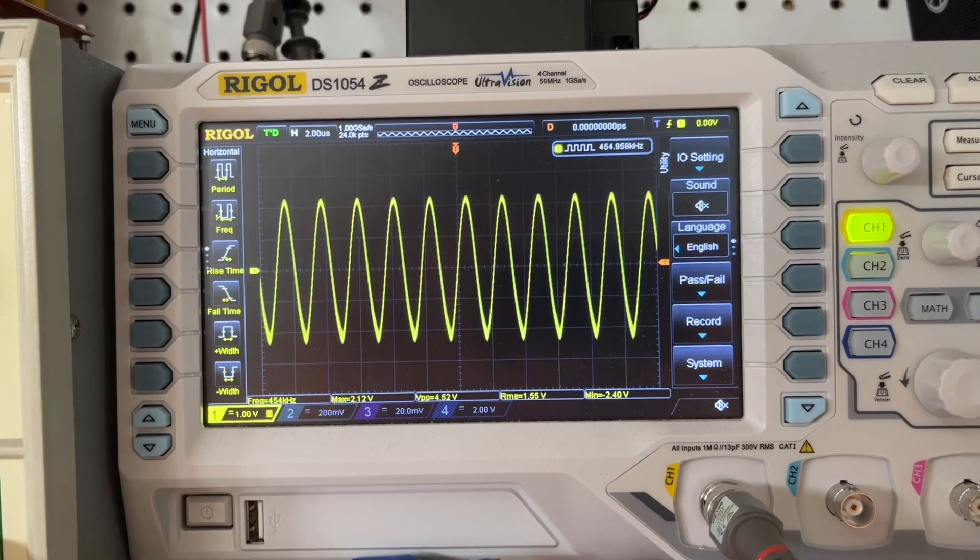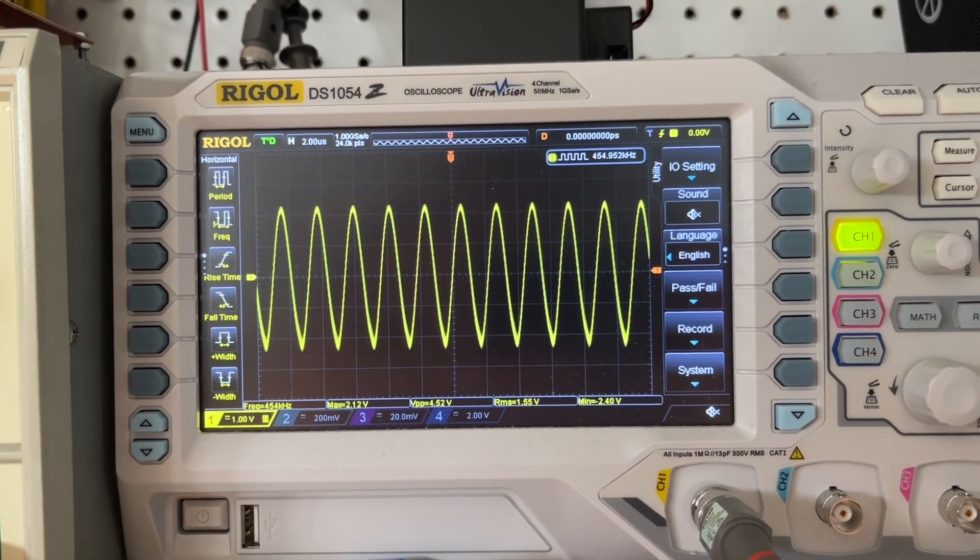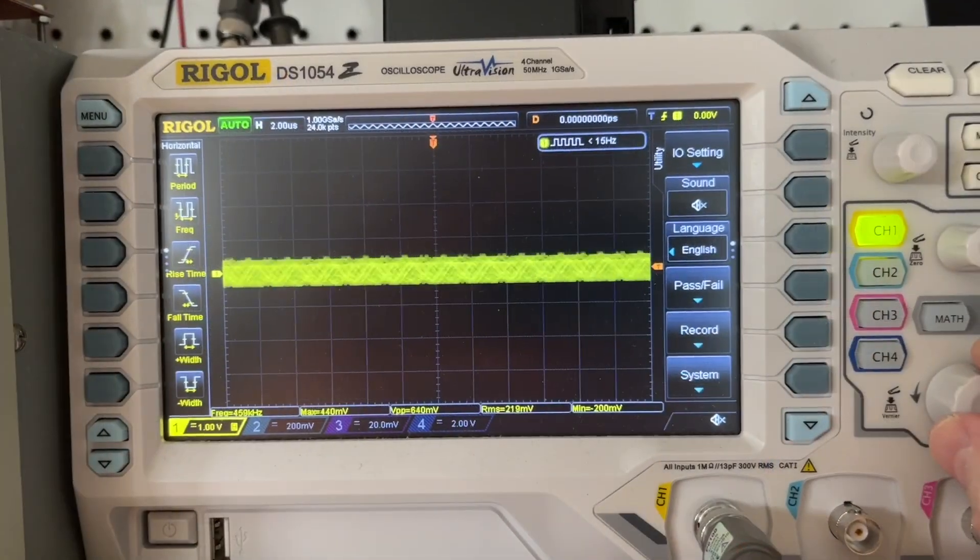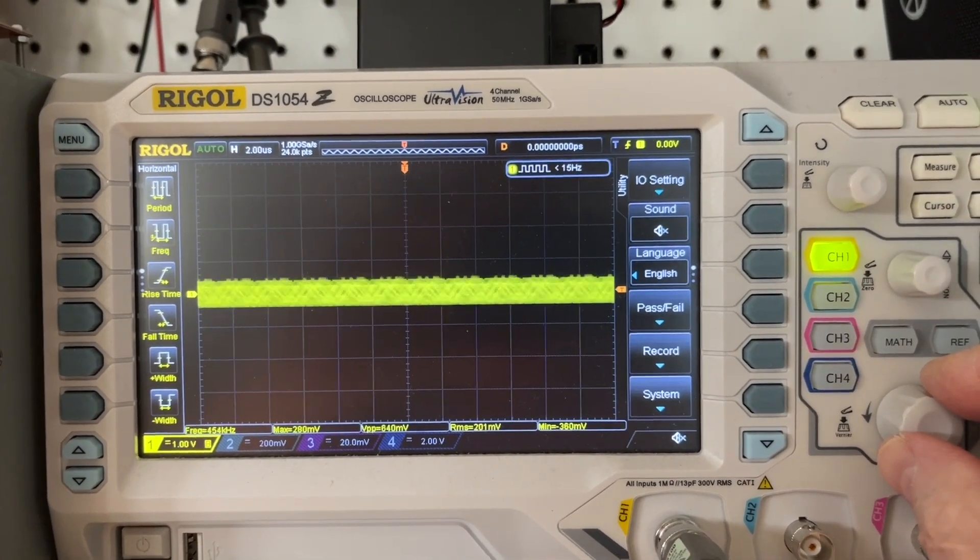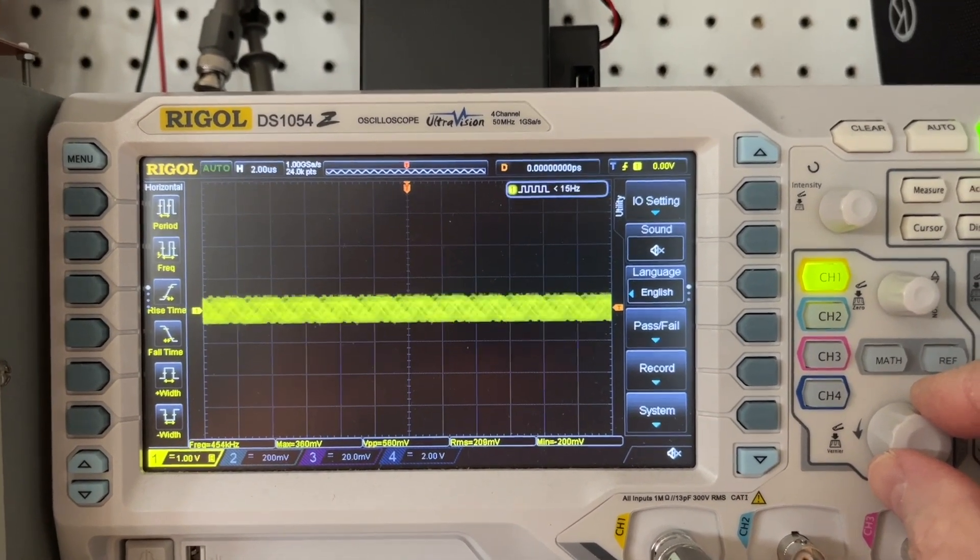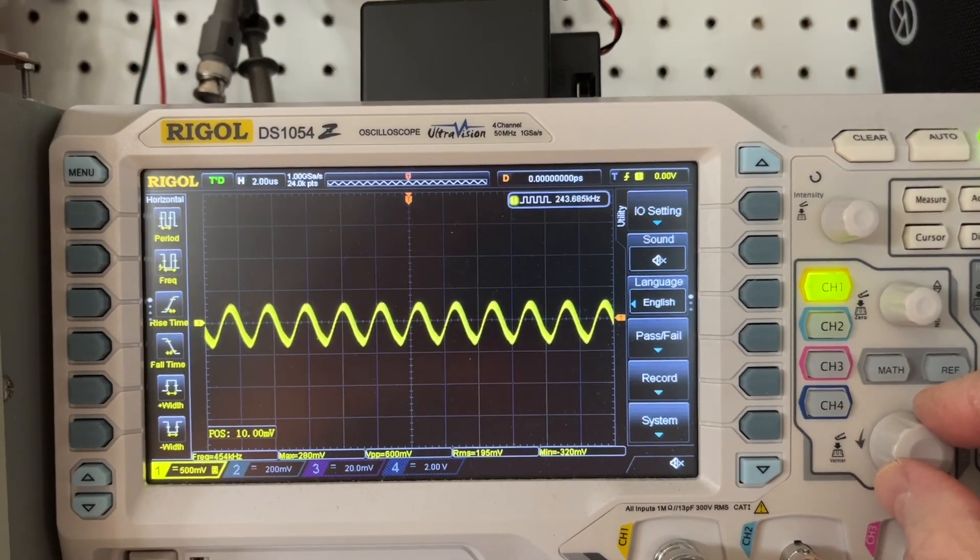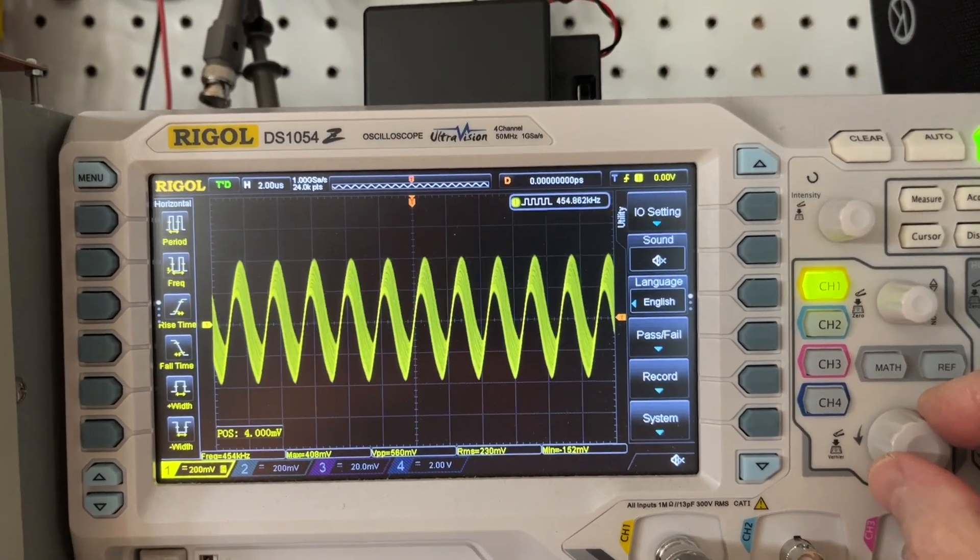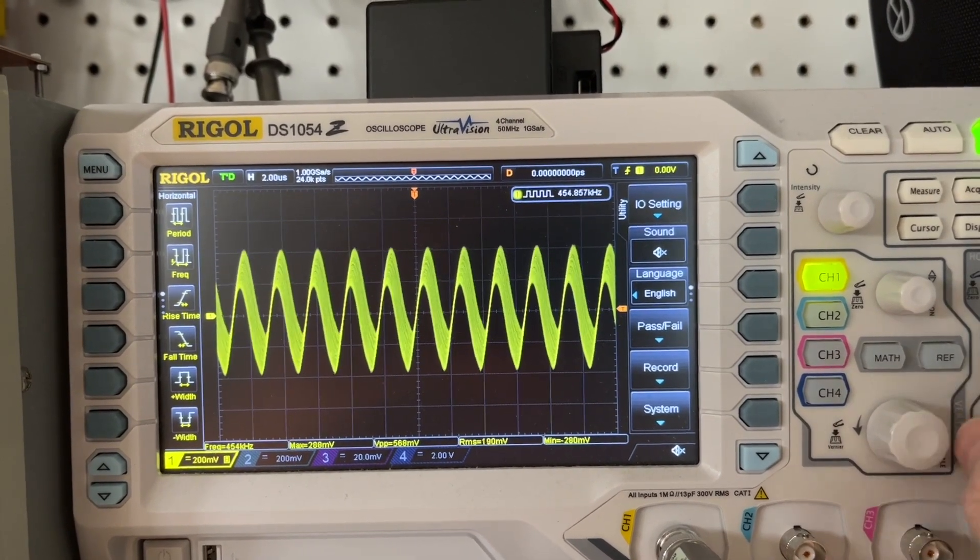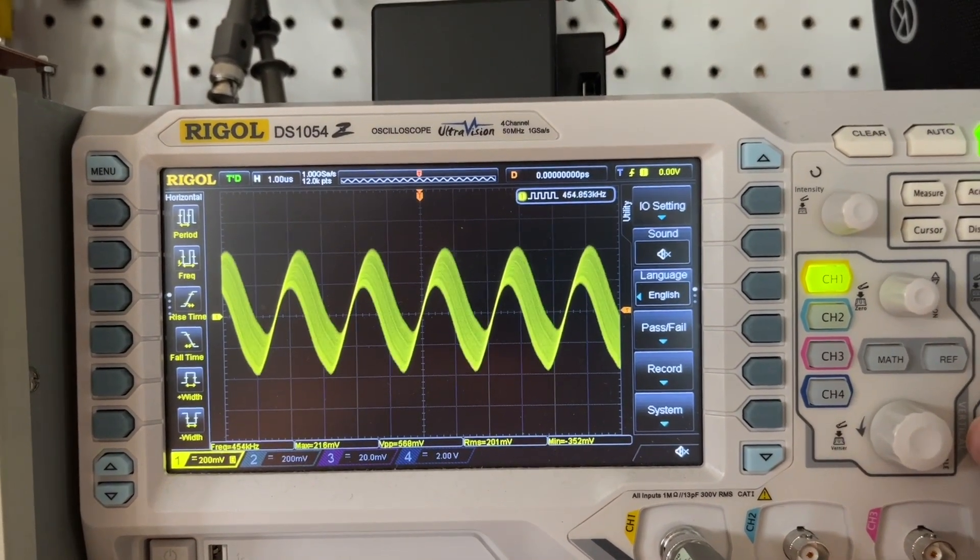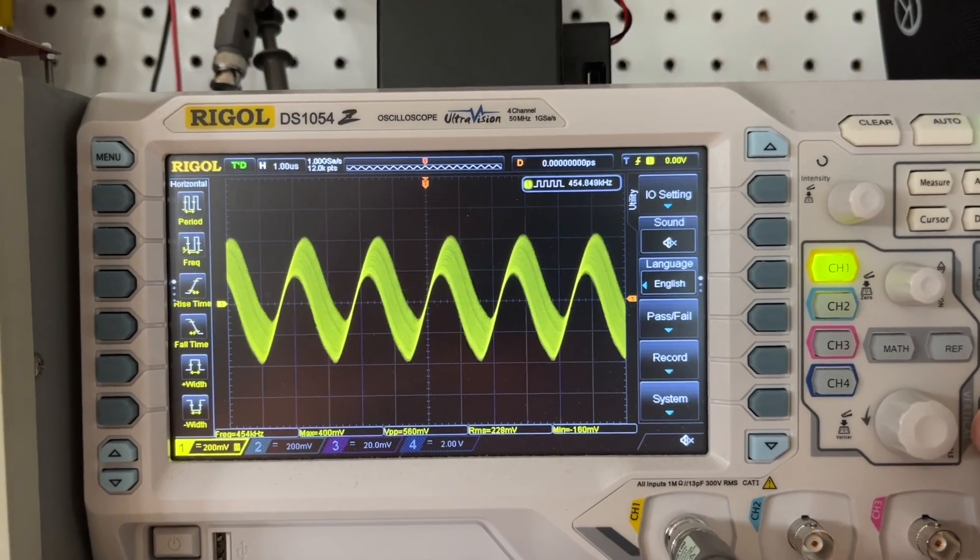Let me attach it back and I'll show you the difference here on the scope. Now I have the capacitor hooked up and we're shunting the IF frequency to ground. And you can see the amplitude now of the IF signal on the audio side.